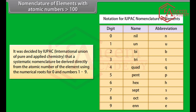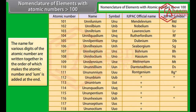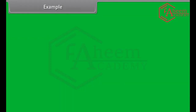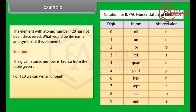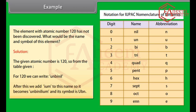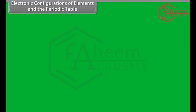Nomenclature of elements with atomic numbers greater than 100: IUPAC decided that a systematic nomenclature be derived directly from the atomic number of the element, using numerical roots for 0 and numbers 1 to 9. The names for the various digits of the atomic number are written together in order, and 'ium' is added at the end. Example: the element with atomic number 120 has not been discovered. The given atomic number is 120, so from the IUPAC table we write UNBINIL, then add IUM to get UNBINILIUM, and its symbol is UBN.